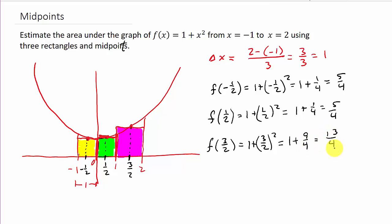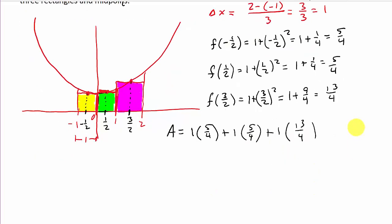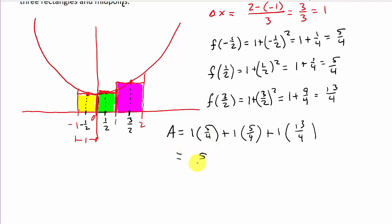So now we're ready to find the area. So the area under the curve, well, I've got to find the area of each rectangle. So it's the width of the rectangle, which is 1, times the height. So the height of this one is five-fourths, plus the area of this one. Well, the width is 1 times the height, which is five-fourths, plus the width of the last rectangle, which is 1 times the height, which is 13 over 4. So this is just going to be five-fourths plus five-fourths plus 13-fourths. And that is going to give us 23 over 4 for the area.